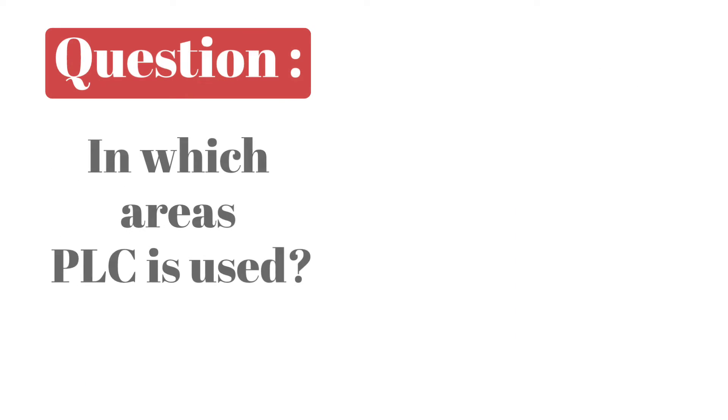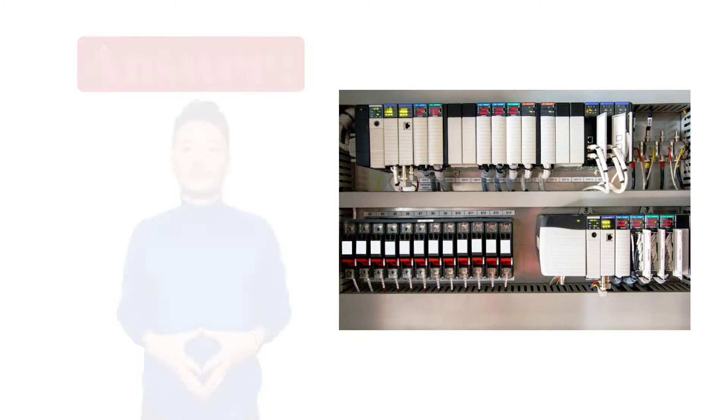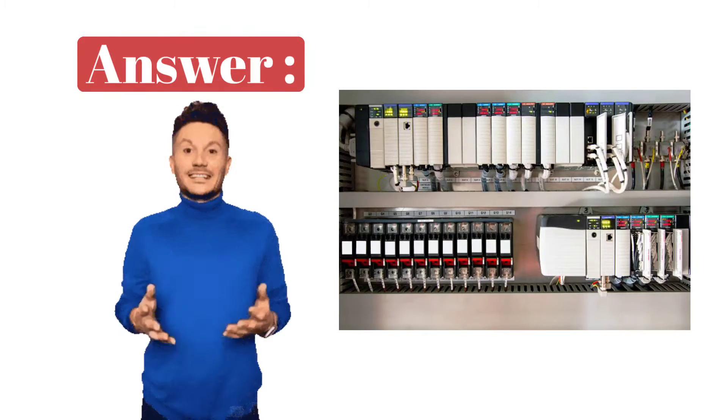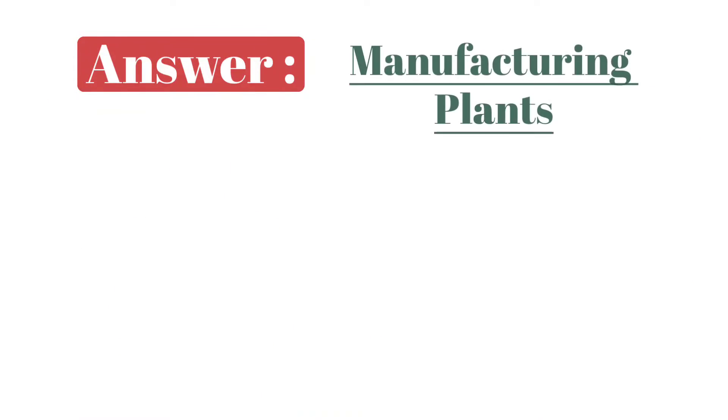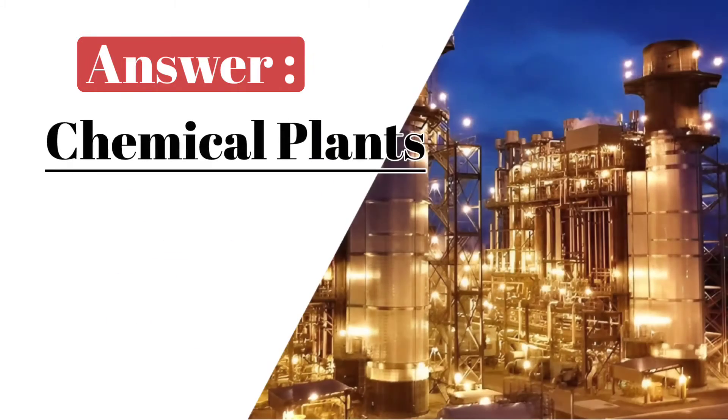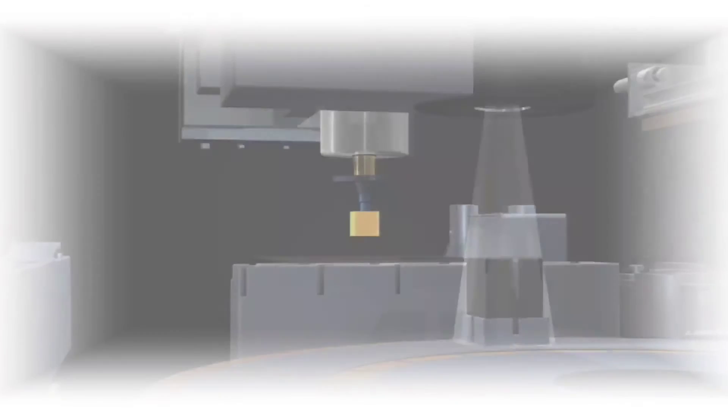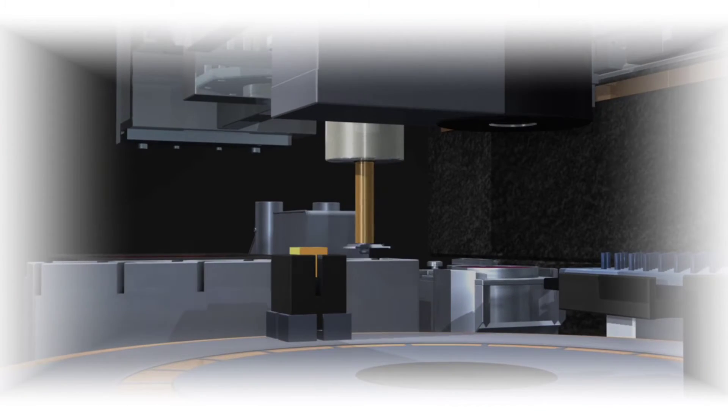Question is, in which areas PLC is used? Answer is, PLC is used in manufacturing plants, power plants, chemical plants, and other industrial processes where automation and control is required.